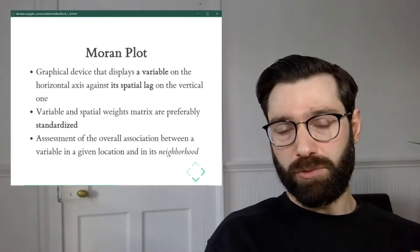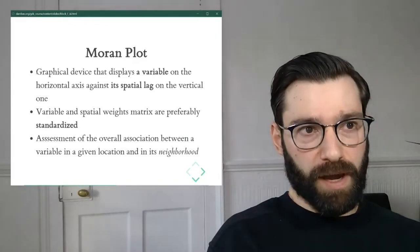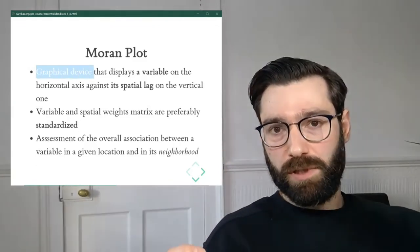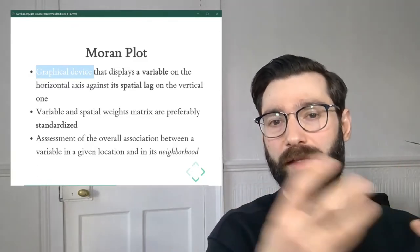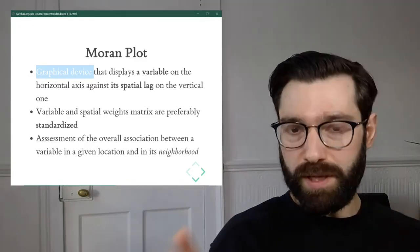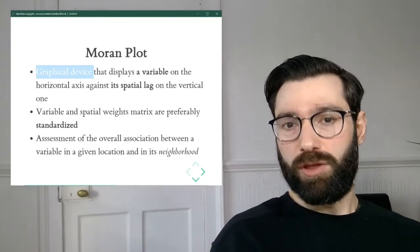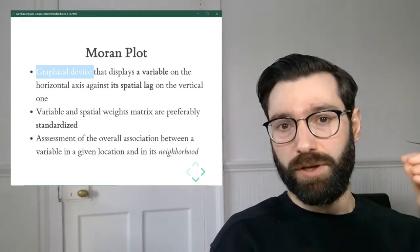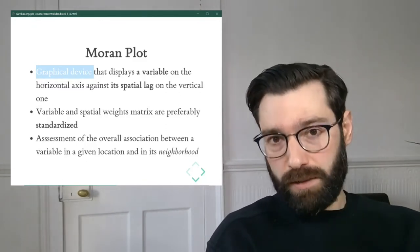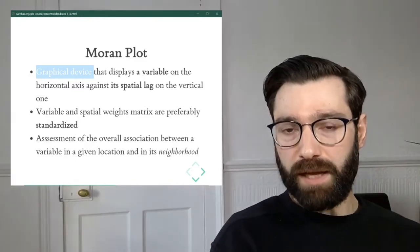In this context, we're going to focus on something called the Moran plot, which is a graphical device. We're going to start this translation between the conceptual notion of Global Spatial Autocorrelation and a statistical translation through visualization. Remember, visualization is a good tool to get us thinking about the processes.